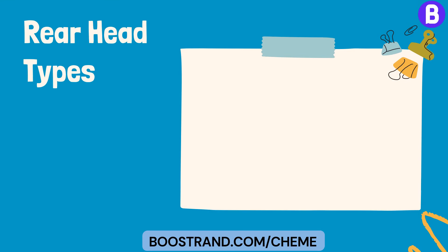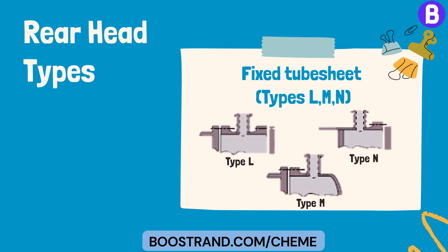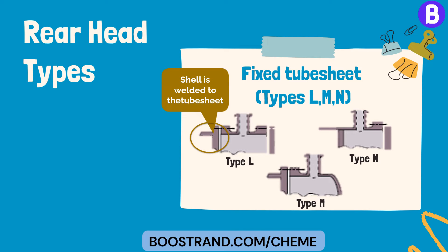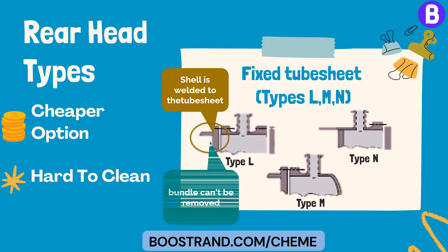Now let's talk about rear head types. Fixed tube sheet, Types L, M, N: these designs feature tubes fixed to tube sheets welded to the shell. It's a cost-effective option, but cleaning the outside of the tubes can be challenging as the bundle cannot be removed.